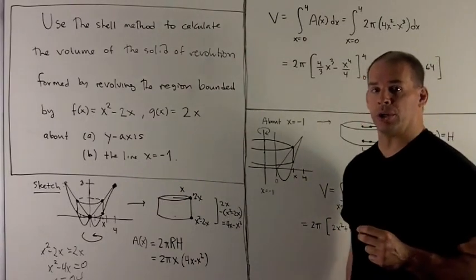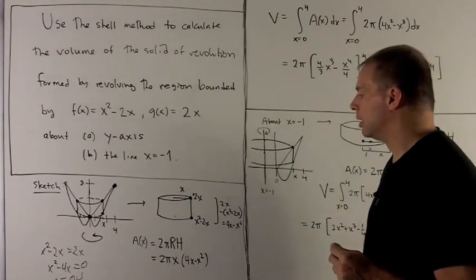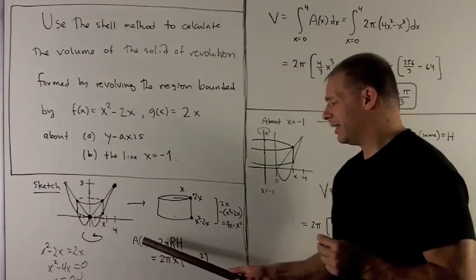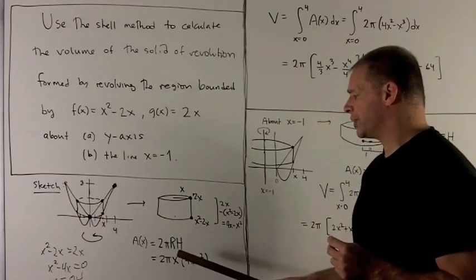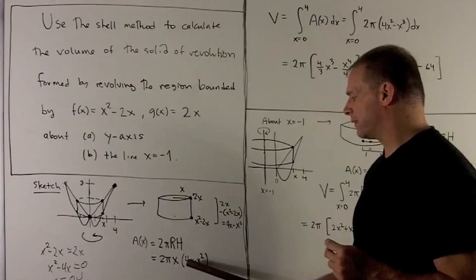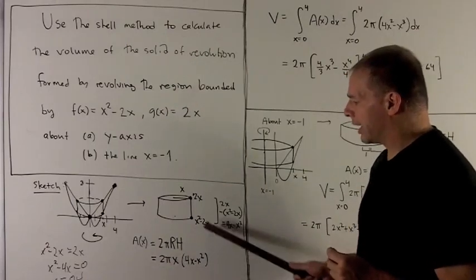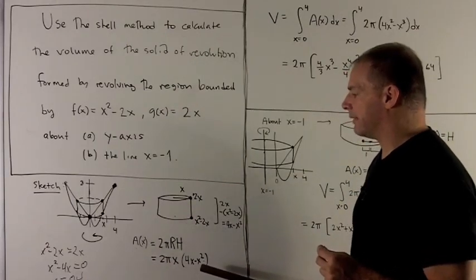Make sure you use your parentheses here or you're going to lose a sign. So now I can chug ahead. The area is 2πrh. R is x. H is 4x - x². And now I can plug this into an integral to get a volume.